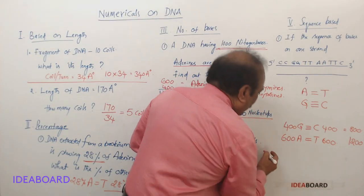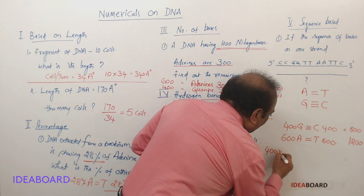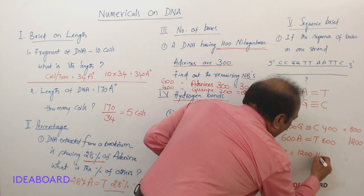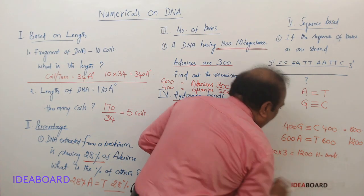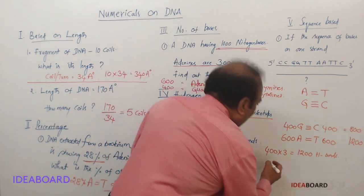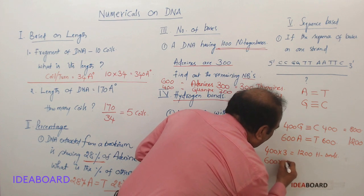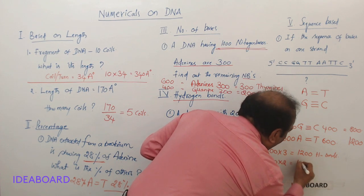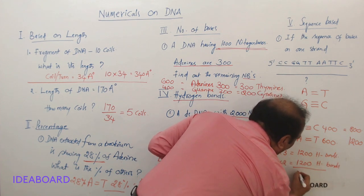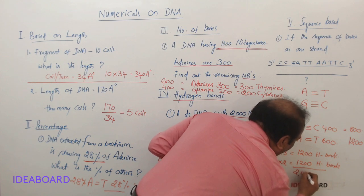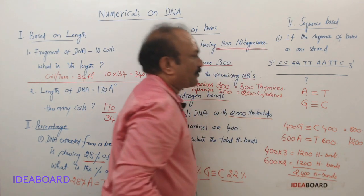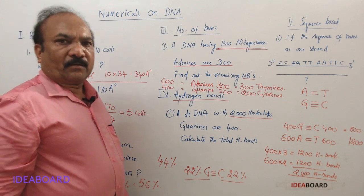Now how to calculate the number of hydrogen bonds? Between G-C, triple hydrogen bond is there, so 400 into 3—1200 hydrogen bonds. Between adenine and thymine, double hydrogen bond is there, so 600 into 2—1200 hydrogen bonds. So the total number of hydrogen bonds here are 2400 hydrogen bonds.